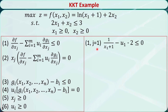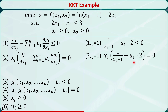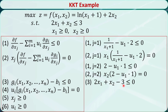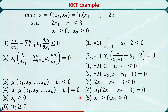When j is equal to 1, condition 1 — the partial derivative of f with respect to x1 minus u1 times the partial derivative of g with respect to x1 — leads to this inequality. Condition 2: x1 times the left-hand side of the first condition is equal to 0. When j is equal to 2, condition 1 — the partial derivative of f with respect to x2 minus u1 times the partial derivative of g with respect to x2 — leads to this inequality. Condition 2: x2 times the left-hand side of this condition is equal to 0. Condition 3: we rewrite the constraint by moving the right-hand side to the left. Condition 4: u1 times the left-hand side of condition 3 is equal to 0. Conditions 5 and 6 give the sign restrictions for x1, x2, and u1.